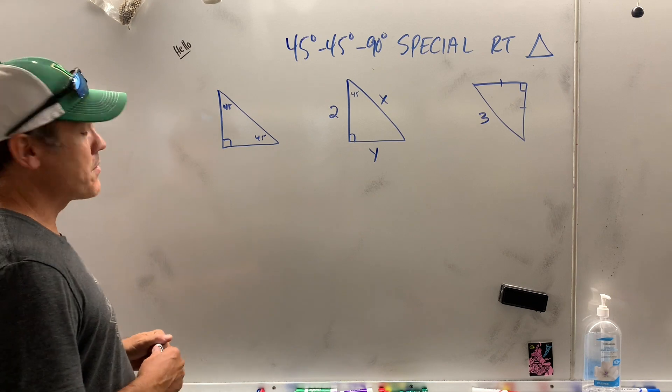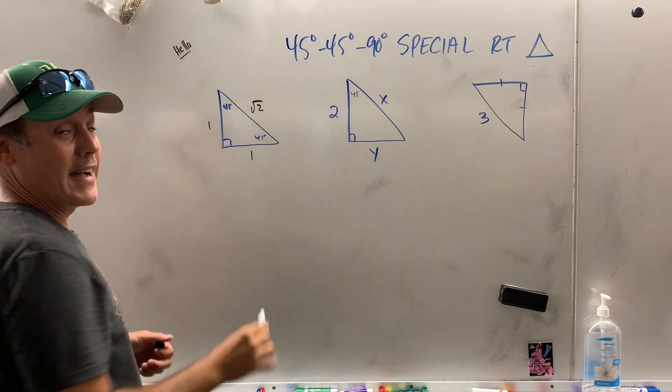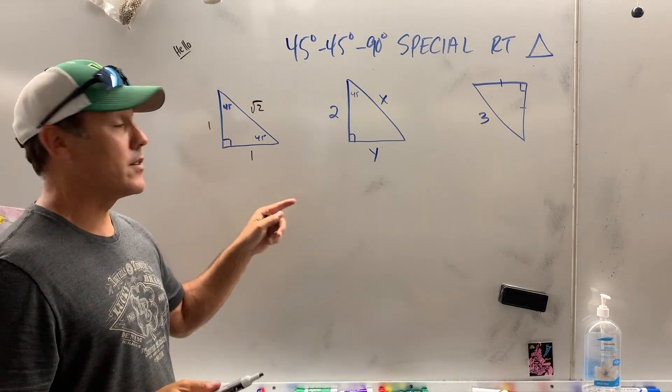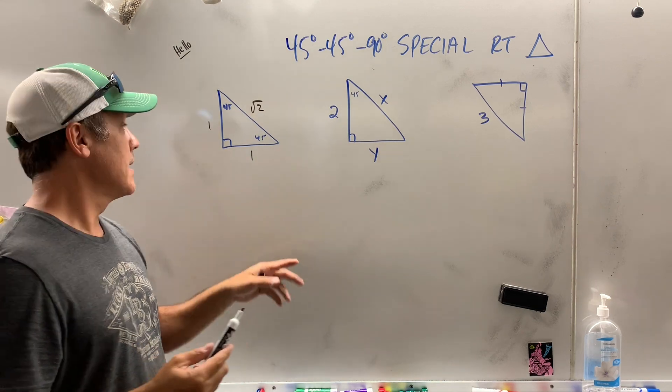So here's my reference triangle. I know it's 1-1 radical 2. On the SAT, they love this triangle. They'll do x-x-x radical 2. It's the same thing. I just prefer looking at numbers.